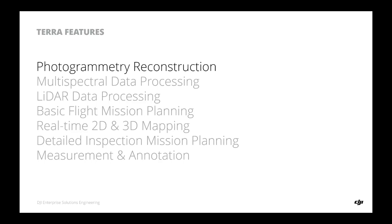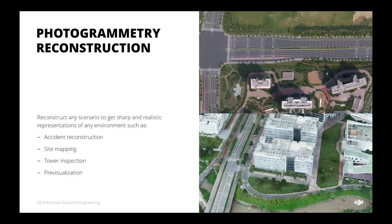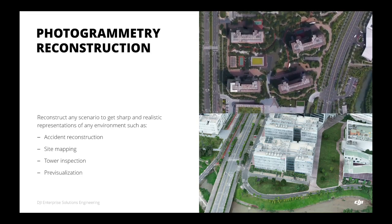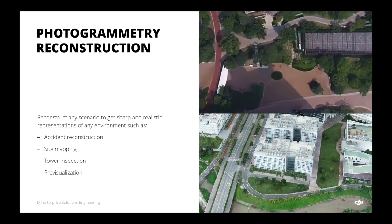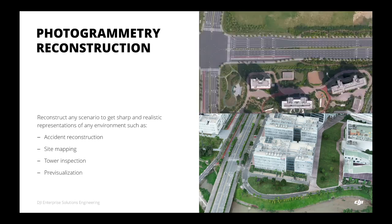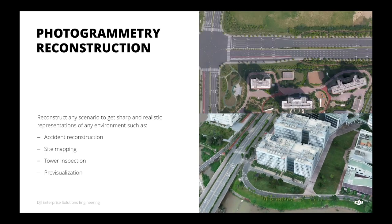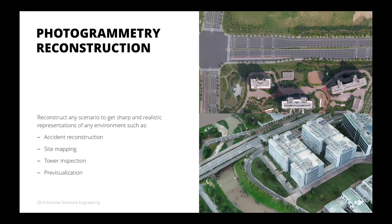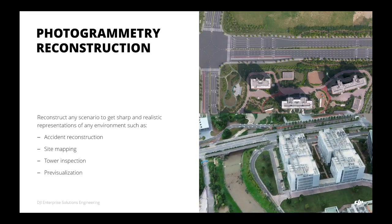Those are the examples and results from DJI Terra. Now here we have the DJI Terra functionalities and main selling points. The first one is photogrammetry reconstruction, which is the top selling point of DJI Terra software. It enables users the capability to reconstruct any scene and generate a digitalized version of it.